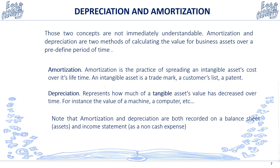Let's look at two important concepts: depreciation and amortization. Amortization is the practice of spreading an intangible asset's cost over its lifetime. An intangible asset is a trademark, a customer list, or a patent — they have value when you create or buy them, and they are amortized over time, meaning the cost is spread over a certain period.